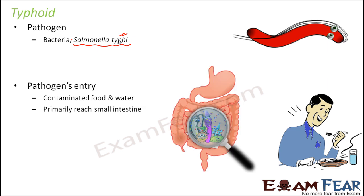Once the bacteria enters the body through food or water, it primarily reaches the small intestine. Food is taken through the mouth, passes through the alimentary canal to the stomach, and from there reaches the small intestine. From the small intestine, through the bloodstream, it can reach any other part of the body, and can invade other organs such as the gallbladder, liver, or intestinal tract.